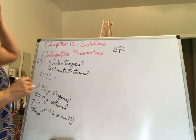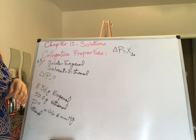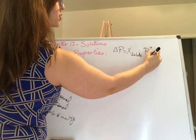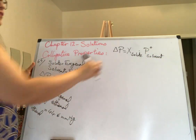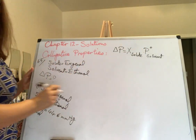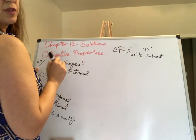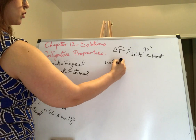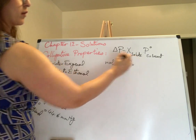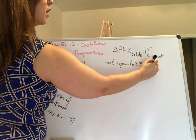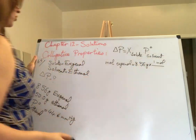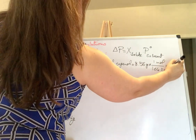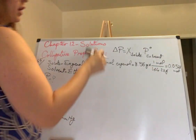Pay close attention to the wording: 'vapor pressure lowering' means look for delta P, not vapor pressure itself. To solve it, use delta P equals x of solute times P-star of solvent. Note: there is a typo on the PowerPoint slide — it should say solute, not solvent. You need to find the mole fraction of solute, so first find moles of solute. Moles of eugenol: 8.56 grams divided by 164.22 grams per mole gives 0.0521 moles.